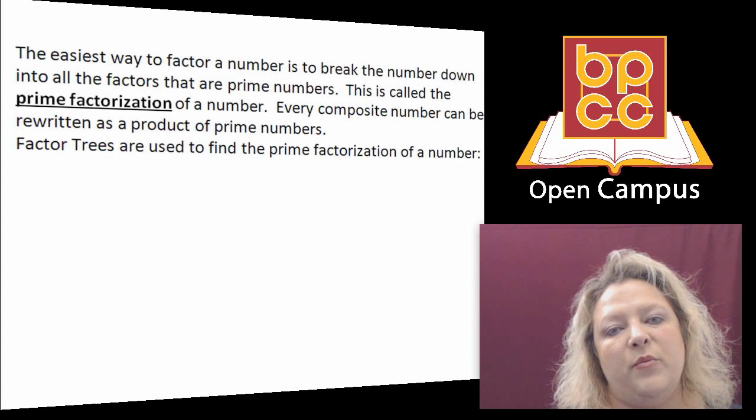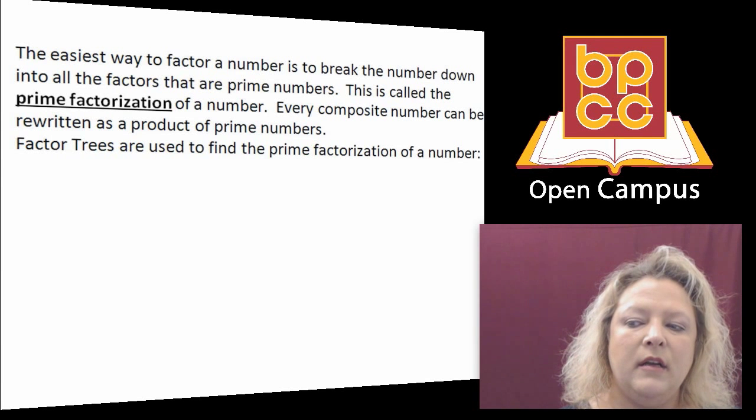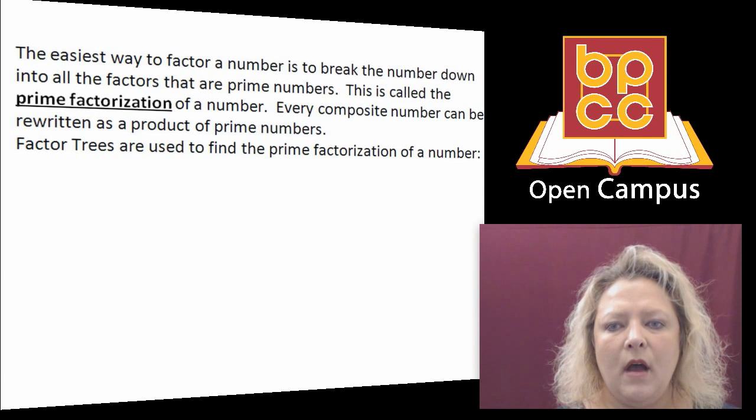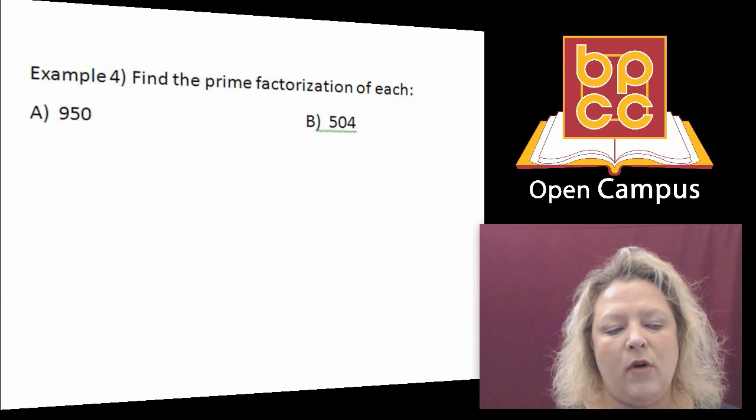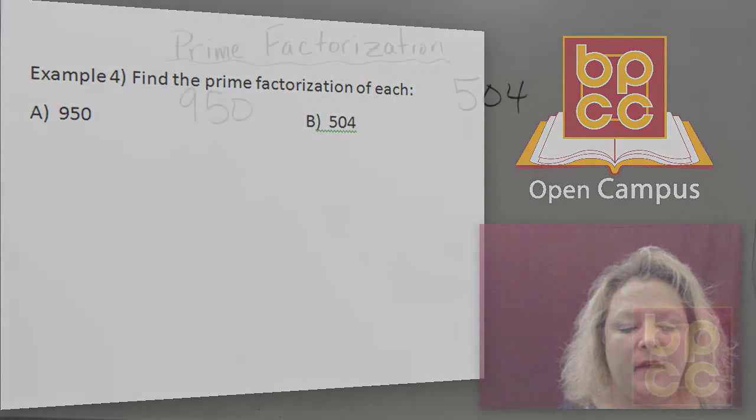Now the easiest way to break these composite numbers down is to know the prime factorization which means factor trees. So we're going to work on a couple of these up on the board and the two that we're going to work on are 950 and 504. I'm going to move us to the board now.